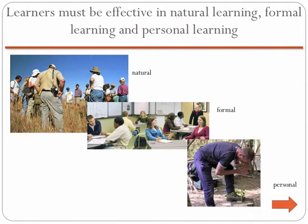She suggests that learners need to be effective at learning in three kinds of learning. Natural learning, learning that occurs as the individual interacts spontaneously with the environment. Formal learning, learning in which content is chosen by others and presented to the learner. And personal learning, self-directed, intentional learning activities.